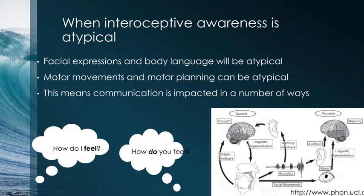Motor movements and motor planning can also be atypical in people with atypical interoceptive awareness. Because communication via speech is motor movement and motor planning, that can also be impacted. Speech involves how you move your mouth, teeth, and tongue to make sounds — and that can be impacted by your feelings and emotions. We often change our tone of voice when feeling a particular way, and that may not happen if you don't know how you're feeling.